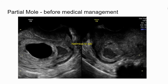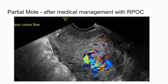This was a partial molar pregnancy which wasn't diagnosed on scan, so the patient underwent medical management. It was thought that this abnormal area here was a haematoma. Unfortunately, after the medical management, she represented with retained products of conception. You can see here that the colour flow was quite intense, indicating high vascularity — and this was confirmed as a partial mole.